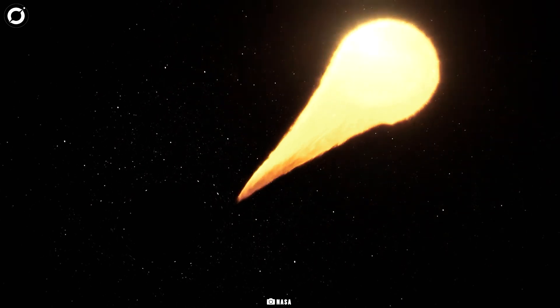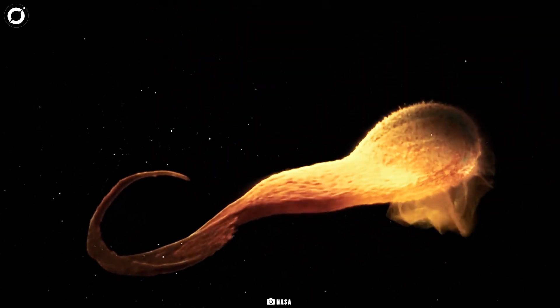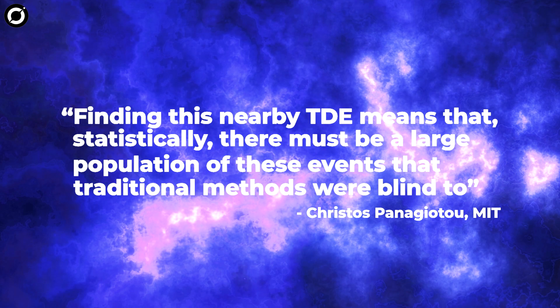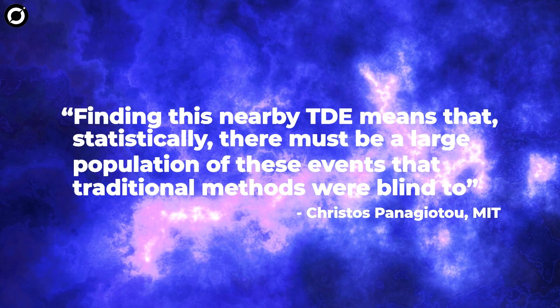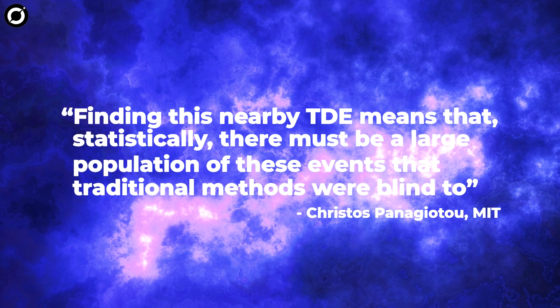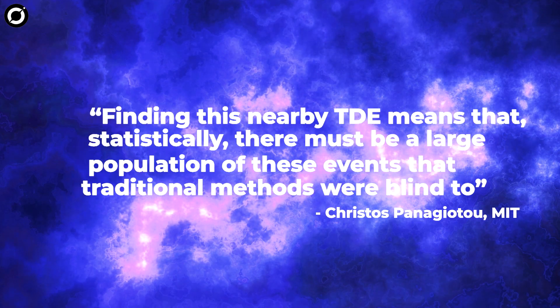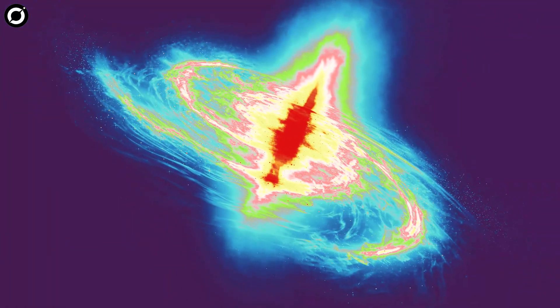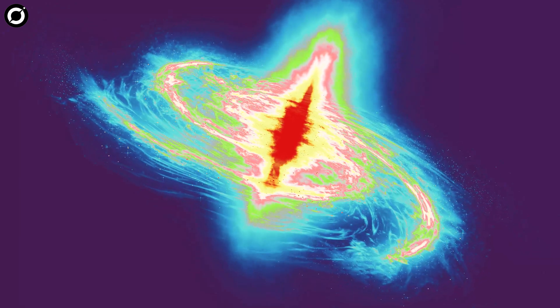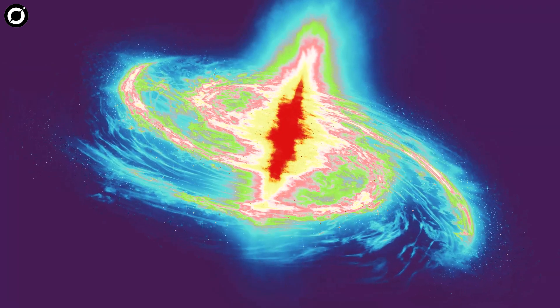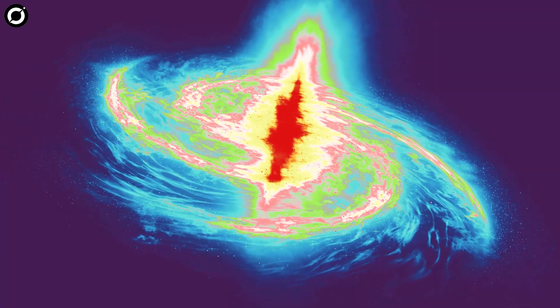On one hand, we've got a black hole close to us that's shredding stars, and then we've got a distant monster black hole that is forming stars. Finding this nearby tidal disruption means that, statistically, there must be a large population of these events that traditional methods were blind to, said lead author Christos Panagiotou, an astronomer at the Massachusetts Institute of Technology. So that then means that we should try to find these in the infrared if we want a complete picture of black holes and their host galaxies.